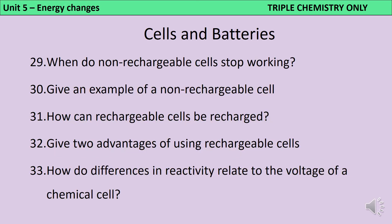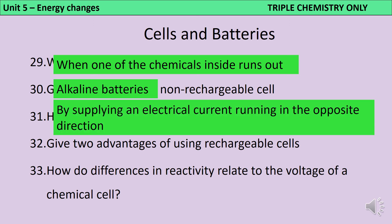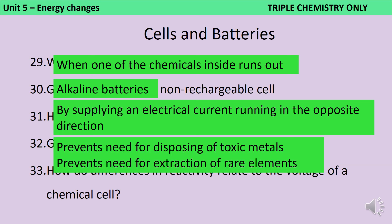Rechargeable cells stop working when one of the chemicals in the cell runs out. Alkaline batteries are an example of a non-rechargeable cell. Rechargeable cells can be recharged by connecting a current which is flowing in the opposite direction to the current produced when the cell was running. Two advantages of using rechargeable cells are that it prevents the need for disposing of the toxic metals that are in the cell, and it also prevents the need for extracting more of those same metals, which are often very rare.